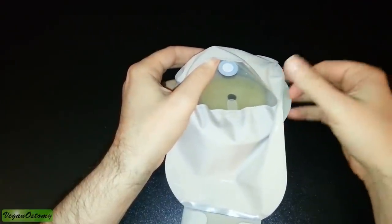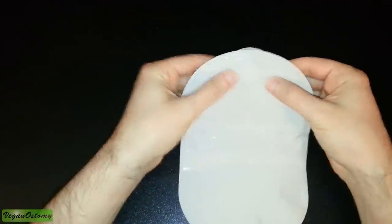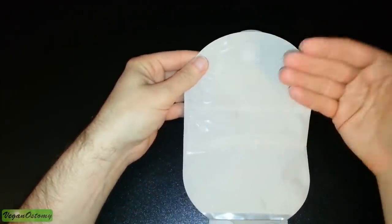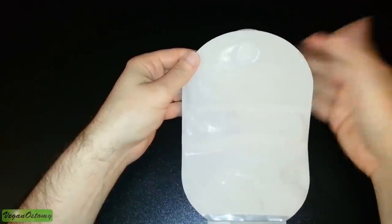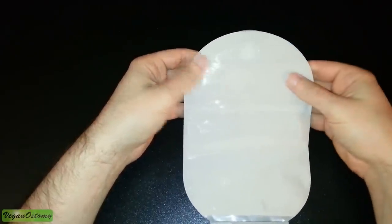If you have an ileostomy, you'll know that generally speaking filters don't work very well. What tends to happen is if you have a very loose output, then it clogs the filter up almost immediately or within a few hours of putting on the appliance, and that really makes the filter ineffective.